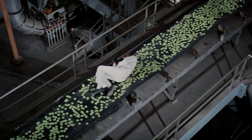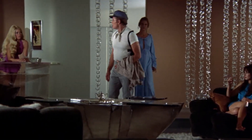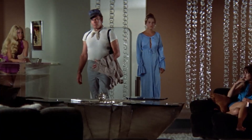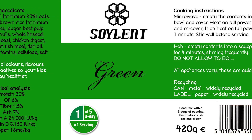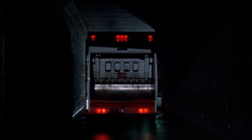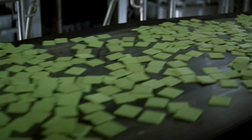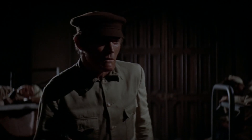The revelation at the heart of Soylent Green is a cinematic bombshell that has echoed through popular culture for decades. As Detective Thorne digs deeper into the mystery surrounding the murder of a wealthy industrialist, he stumbles upon the horrifying truth: Soylent Green is not made from plankton, as the corporation claims, but from processed human remains. The shocking line, 'Soylent Green is people,' delivered by Charlton Heston, has become an iconic moment in film history, encapsulating the film's underlying theme of corporate deception and moral degradation.